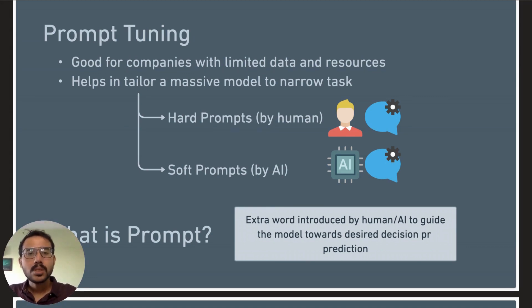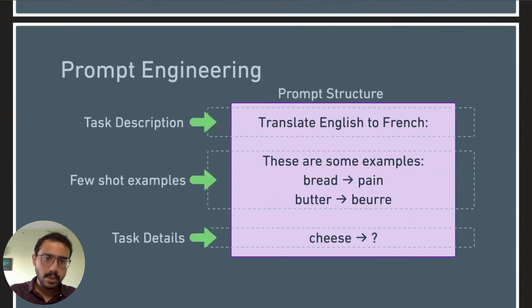These prompts are introduced at inference time to direct the model's output. Let's discuss an example. In this prompt you can see we first mention the task clearly - that is translate English to French. Then we give some few-shot examples of what we expect out of the model, like translations of bread and butter, and then we give the exact task that we want to accomplish.